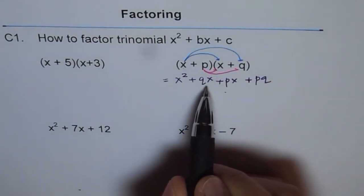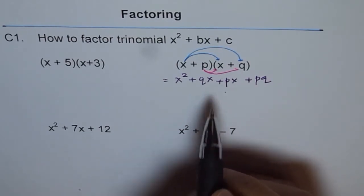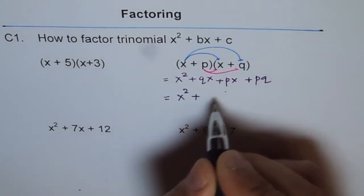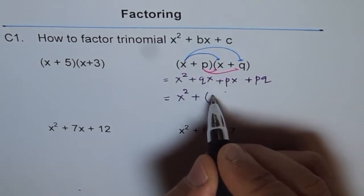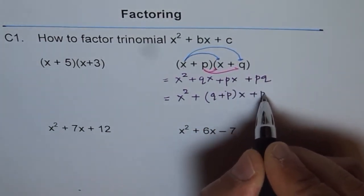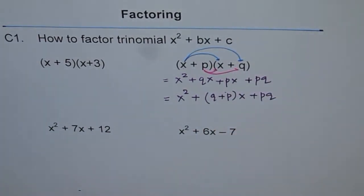You can see here that middle term, we can take x common and combine these two. So I can write this as x squared plus q plus p times x plus pq. So that is what we get.